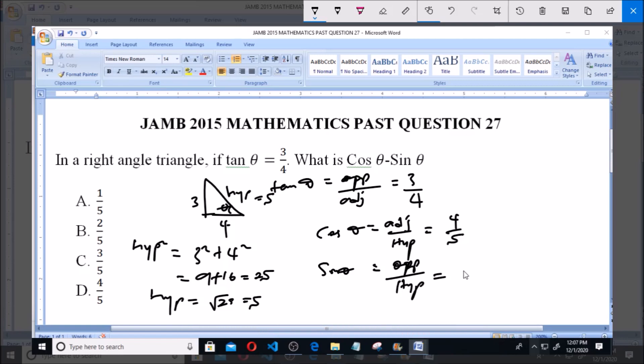Therefore, cos θ - sin θ = 4/5 - 3/5 = (4-3)/5 = 1/5, which is option A.